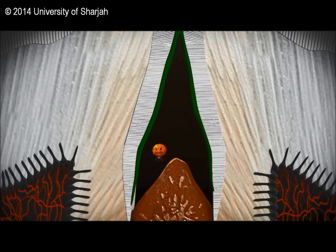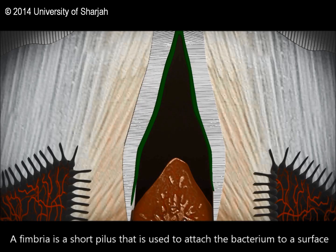Initial attachment occurs when free-floating early colonizers, such as Streptococcus sanguis, form an initial attachment to the pellicle by weak and reversible van der Waals forces. If these bacteria are not removed, they eventually anchor themselves with adhesive structures such as fimbriae.